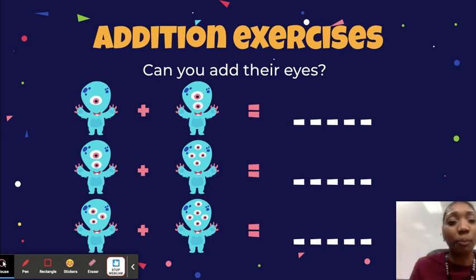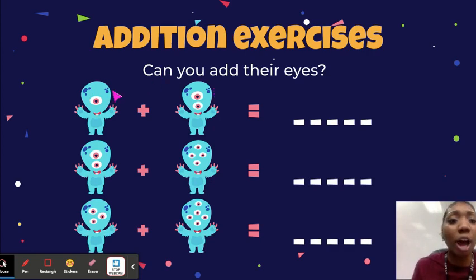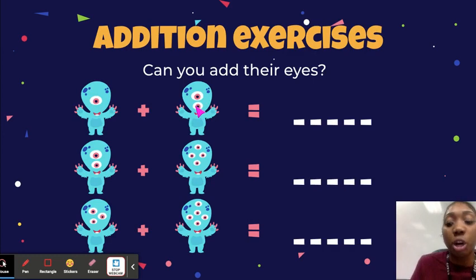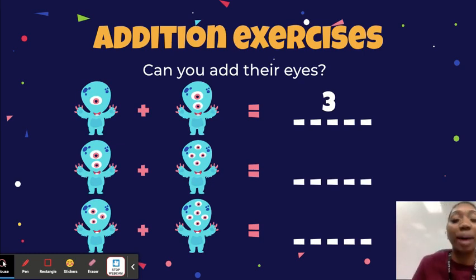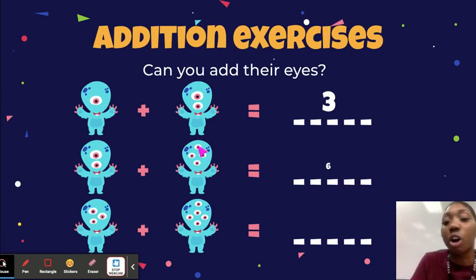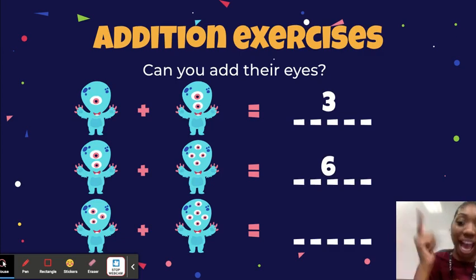Addition is when you take two numbers and add them together to get the total number. Let's try the first set of monsters — can you add their eyes? This monster has one eye plus this monster has two eyes, so one plus two equals three eyes. Great job, did you get three? Now let's try the next one: there are six eyes total. Did you get six? Excellent job.